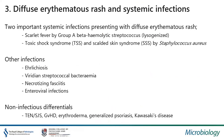The third category is diffuse erythematous rash and systemic infections. Two important systemic infections present with diffuse erythematous rash. This is diffuse, different from the erythematous maculopapular rash. You can see this in scarlet fever, caused by group A beta-hemolytic streptococcus, and in toxic shock syndrome and staphylococcal scalded skin syndrome caused by Staphylococcus aureus. Other infections like ehrlichiosis, clostridium, streptococcal bacteremia, necrotizing fasciitis, and dengue infections are also important. Non-infectious differentials are also very important — particularly toxic epidermal necrolysis or Stevens-Johnson syndrome, which is drug-related, generalized psoriasis, and Kawasaki disease with unknown etiology.